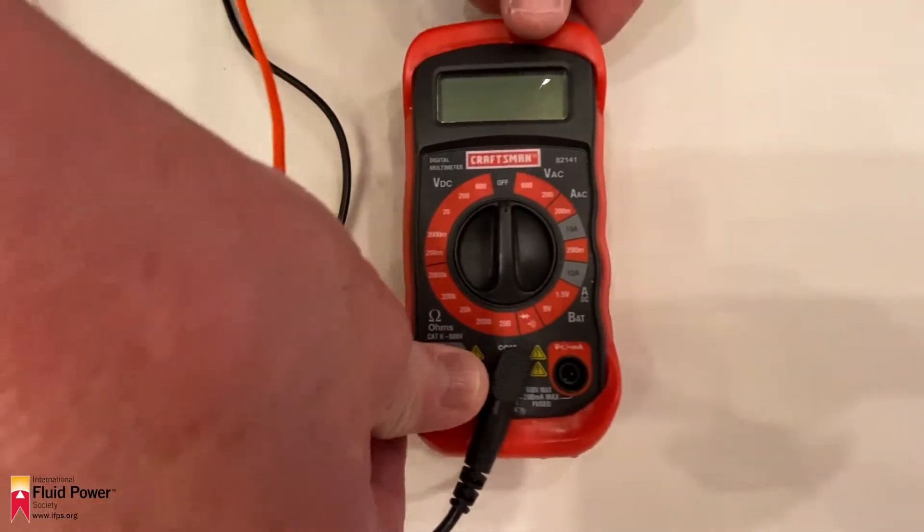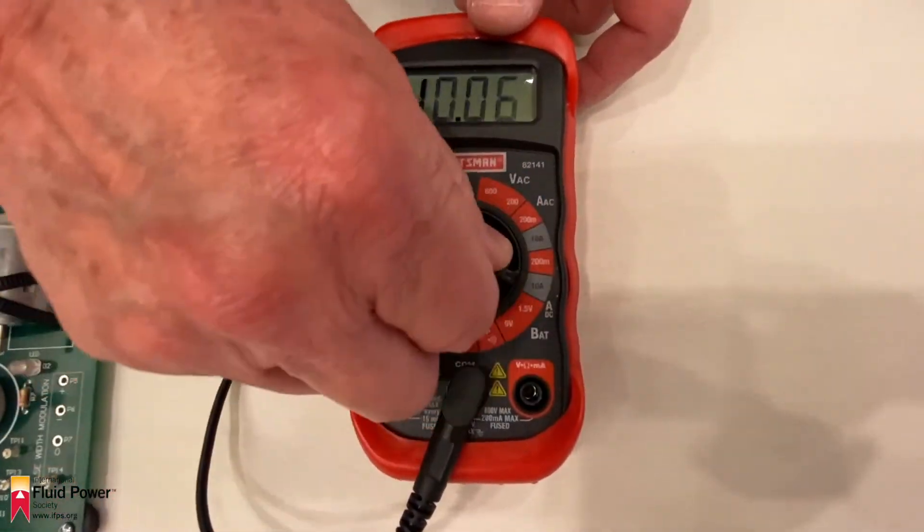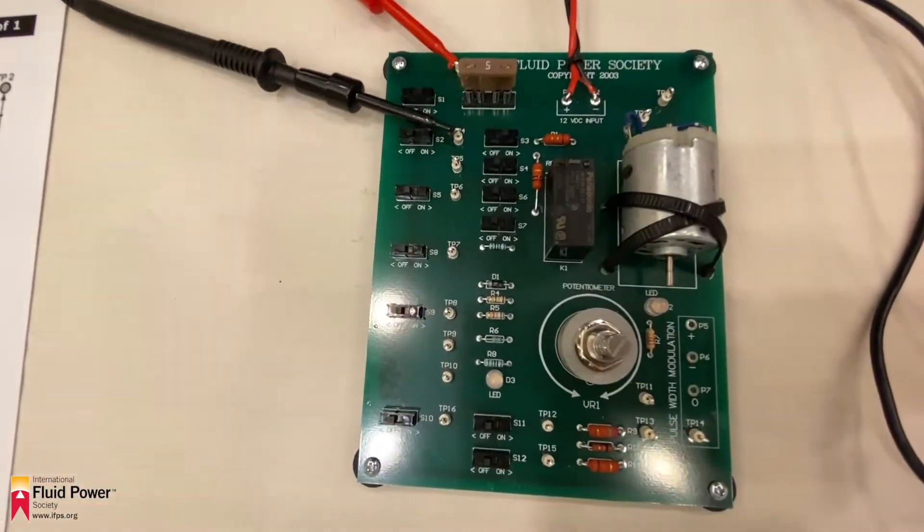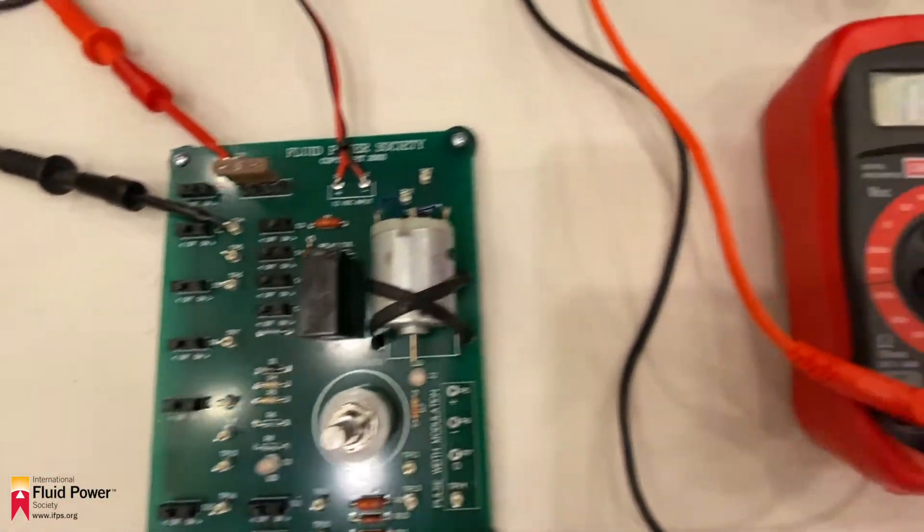By bridging S2 and closing S3 with the red lead on TP1 and the black lead on TP4, the motor will be energized.